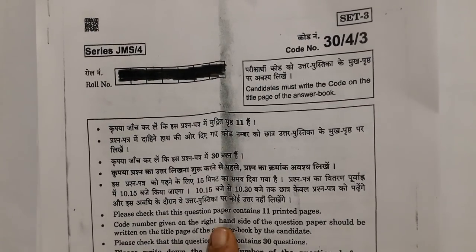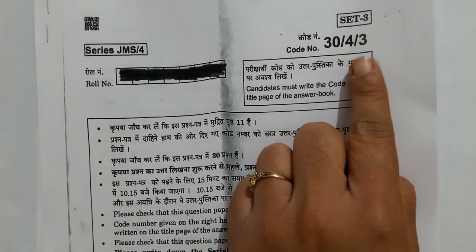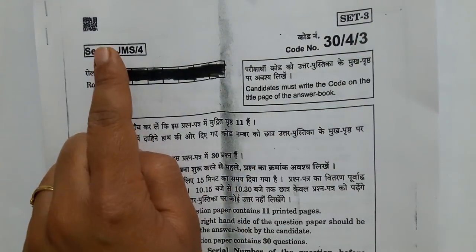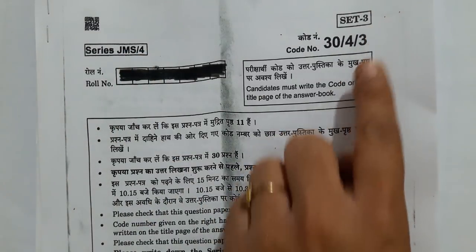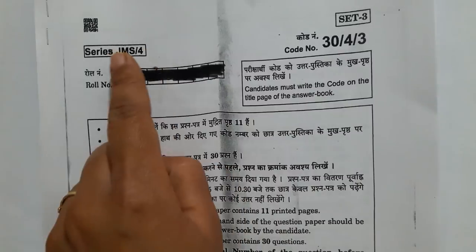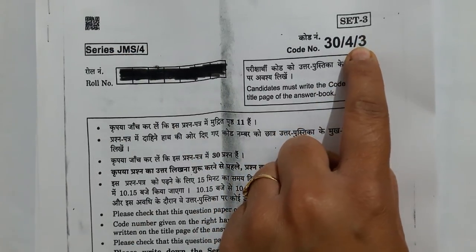I am going to solve this video. Check the series and code or set series. This is JMS Series 4 and set number 3, that is 343. The 4 number is the series and the 3 number is your set.